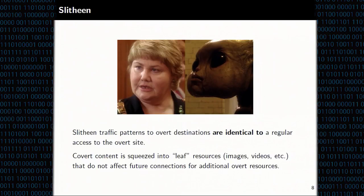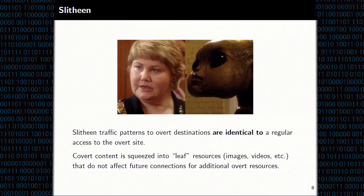Our system addresses both problems by extending the idea of a legitimate connection to requesting actual resources from the overt site. We replace leaf resources — like images and videos, things that won't prompt the browser to request further resources — with censored content. We've named our system Slitheen, a Doctor Who reference: aliens that disguise themselves as humans by fitting inside their victims' bodies, appearing visually indistinguishable. We're doing something similar but with data.